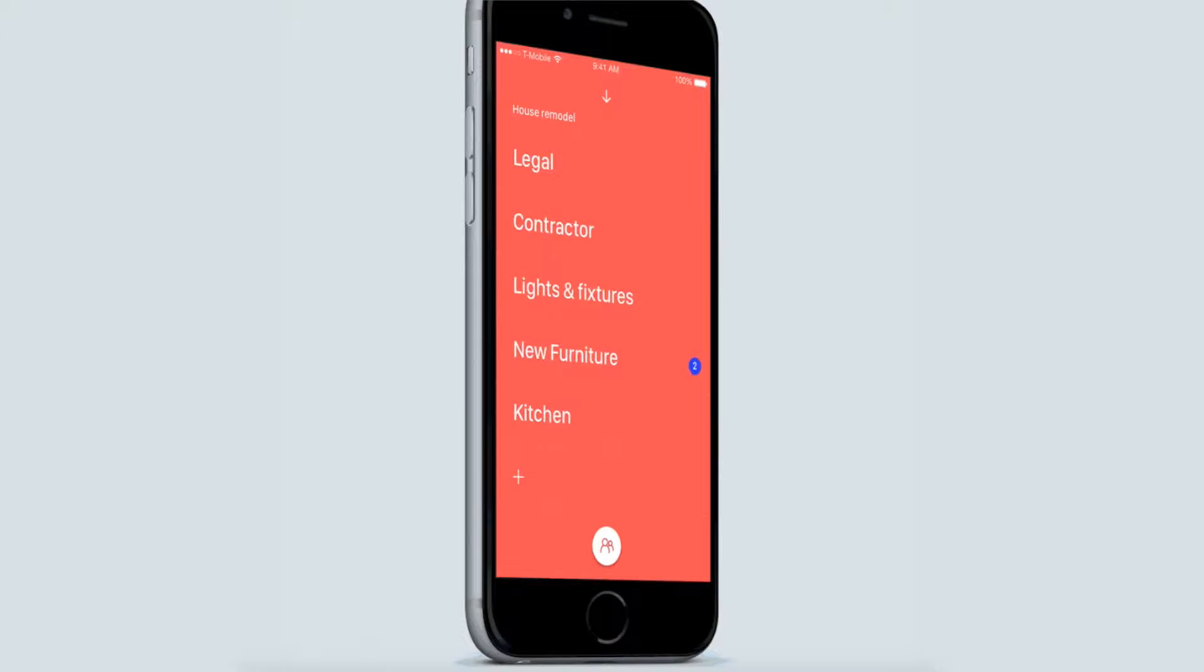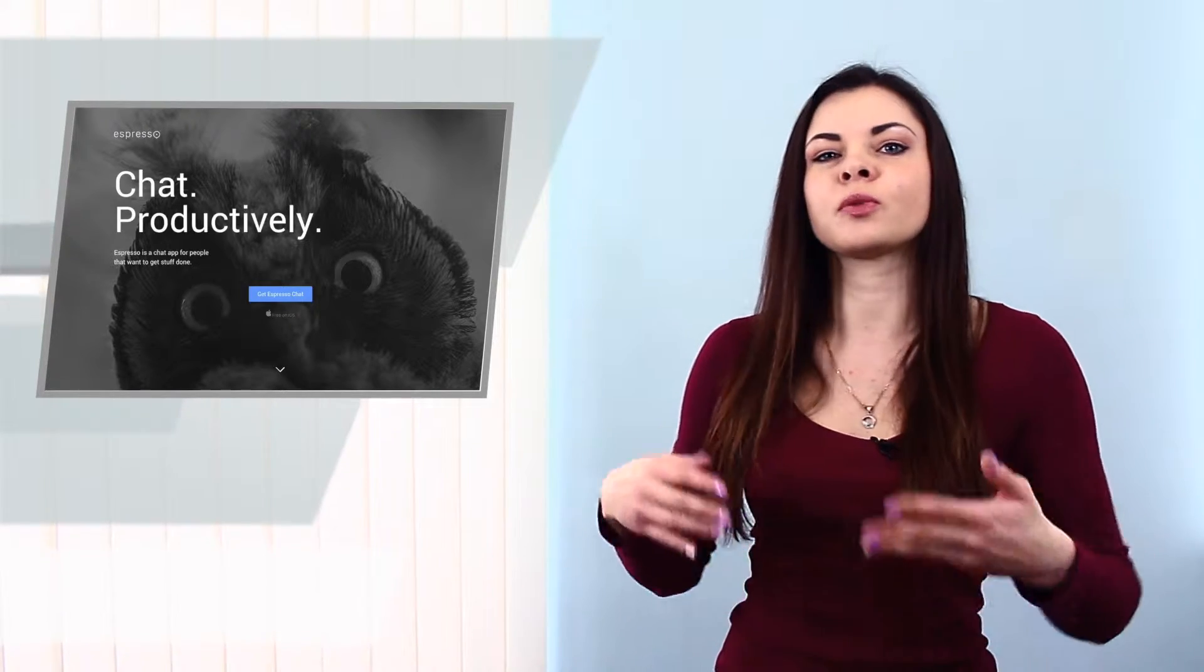Espresso lets you organize messages into spaces – work, family, friends, whatever fits your life. Topics will help you focus on conversation. You can either create a topic or choose a suitable one to participate in. There is no difference. Whether the topic is short-lived or long-lasting, they all are there in your list as soon as you join them.